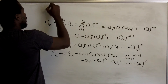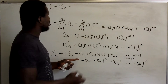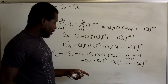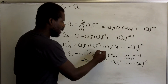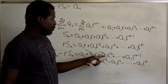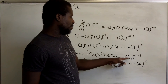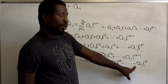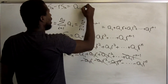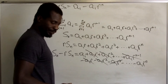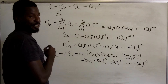After the subtraction, S_n minus r·S_n equals: a1 stays, a1·r and minus a1·r cancel, a1·r² and minus a1·r² cancel, a1·r³ and minus a1·r³ cancel — this continues all the way down. The term a1·r^(n−1) also cancels, and what remains is just a1 minus a1·r^n.